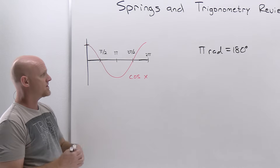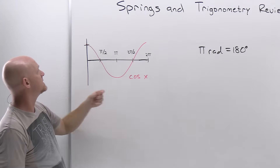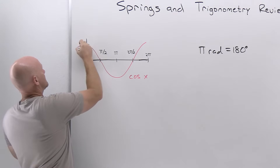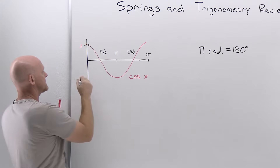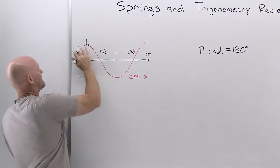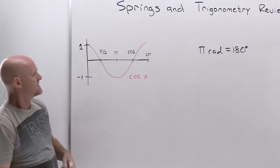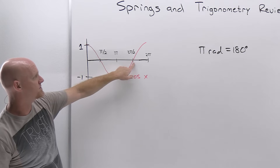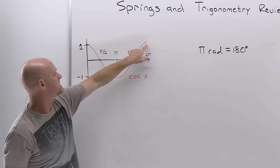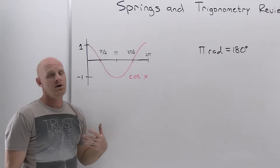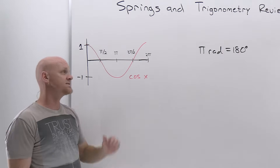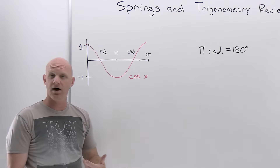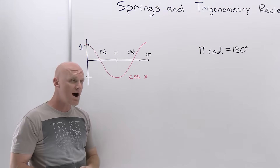For the typical cosine function, cosine of zero equals one — so the function starts at one and oscillates between one and negative one. It passes through zero at pi over two and three pi over two. Then at pi it reaches its minimum of negative one, and at two pi it returns to one, completing one full oscillation. For a typical sine or cosine function, the period is equal to two pi.